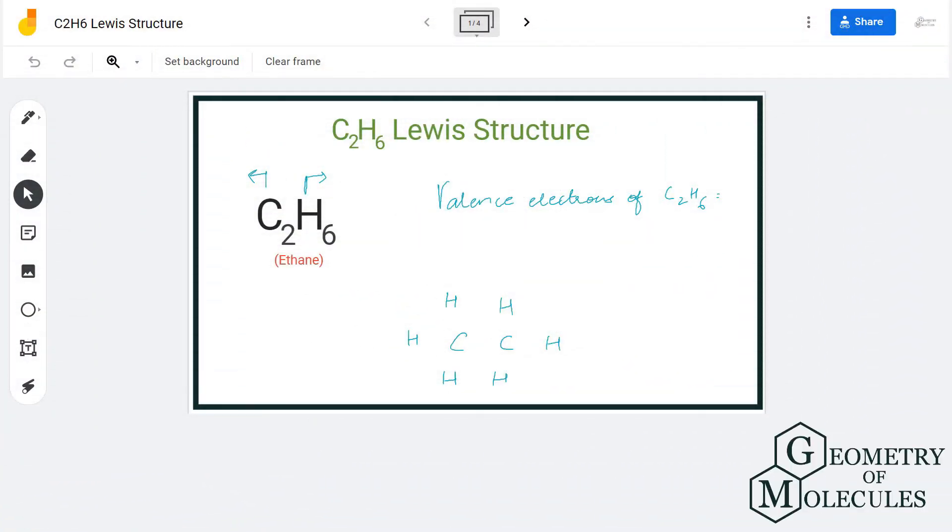Hi guys, today in this video we are going to determine the Lewis structure for C2H6, which is a chemical formula for ethane, and it is made up of two carbon atoms and six hydrogen atoms.